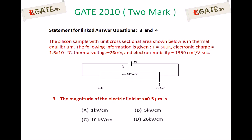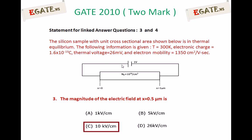You need to calculate the magnitude of electric field at x = 0.5 micrometers. The options are: (A) 1 kV/cm, (B) 5 kV/cm, (C) 10 kV/cm, and (D) 26 kV/cm. The right answer is C, 10 kV/cm.